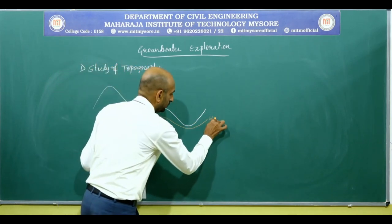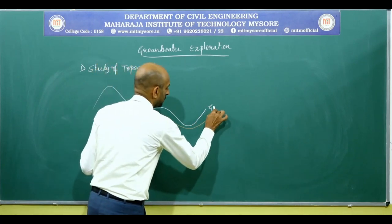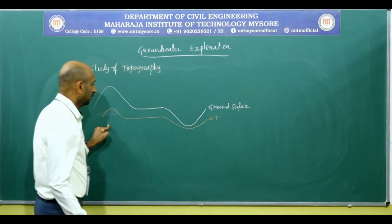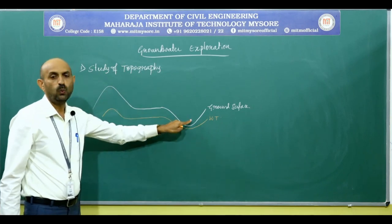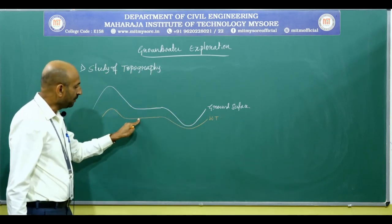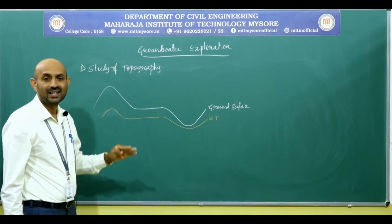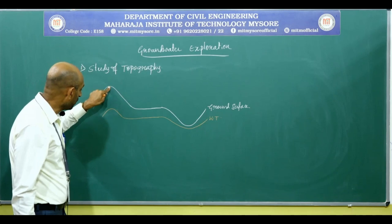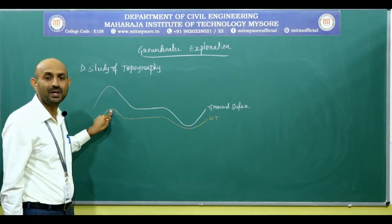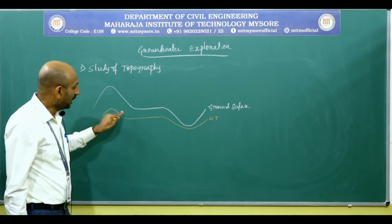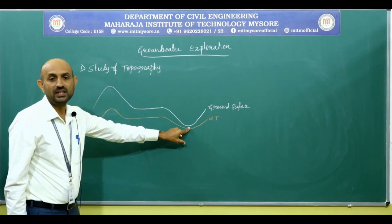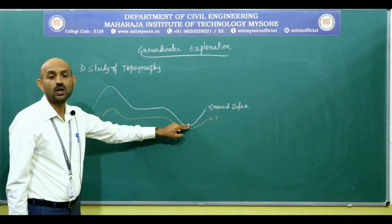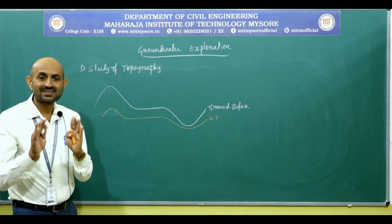The water table generally occurs relatively higher in hill regions. The distance between the surface and the water table is always greater than at level ground and valley regions. At valley regions, the water table is always very close to the ground surface. If the surface has a steep slope, most of the rainfall results in quick surface movement.